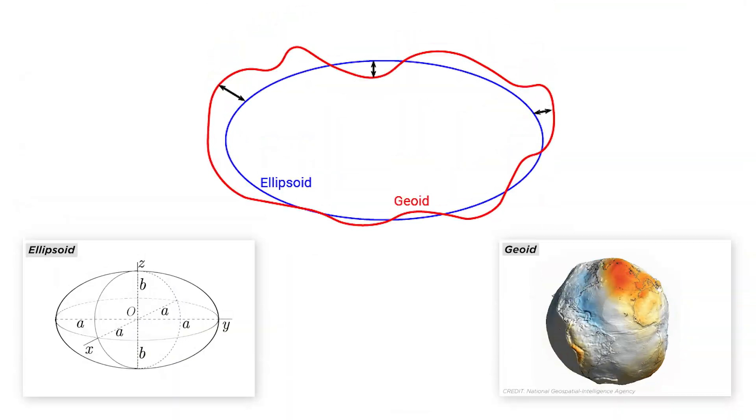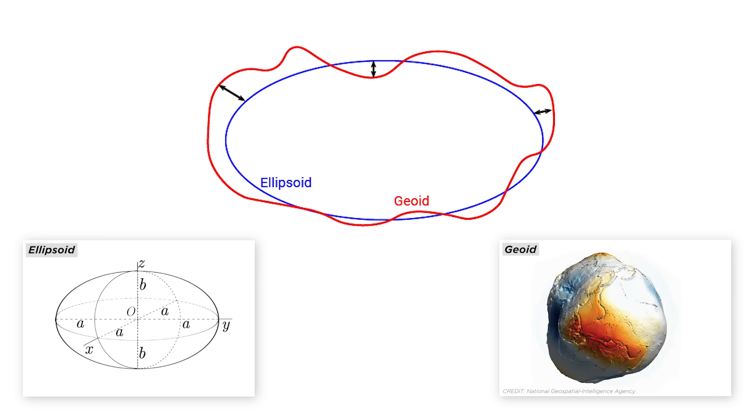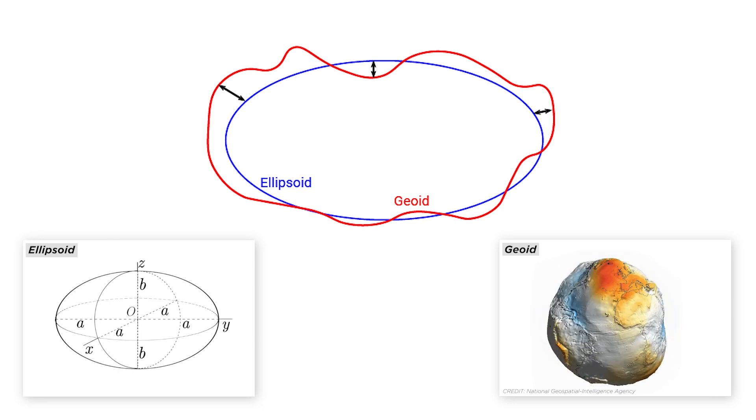An ellipsoid looks like this, and a geoid looks like this. As you can see, the vertical distance from the ellipsoid to the geoid is undulating and inconsistent. So, when you vertically shift LiDAR data referenced from an ellipsoid using a simple linear translation, the resulting LiDAR data will have undulating inaccuracies. Basically, the vertical accuracy of your LiDAR compared to your ground control will be inconsistent from one side of your data to the other.